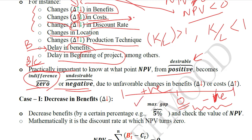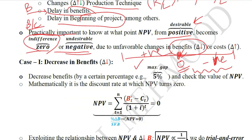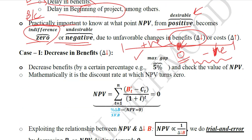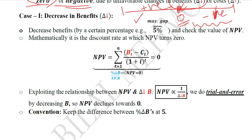We want to know what is that certain level of decline in the benefits which will lead to this cut-off value, because after this point the project is not desirable anymore. As a project analyst, we would like to note this value of benefits so that whenever the benefits decline unexpectedly, we keep an eye on this decline and avoid it from reaching the level where the NPV will become zero. So case one is with the benefits, and the unexpected decline in the benefits is what we are going to experiment with here.